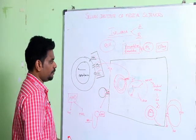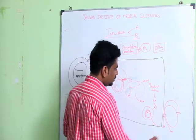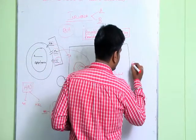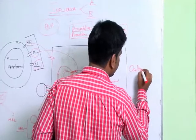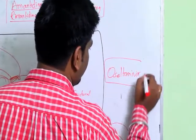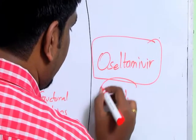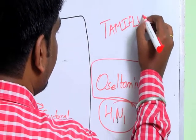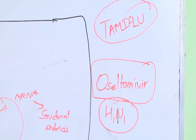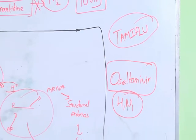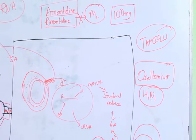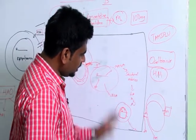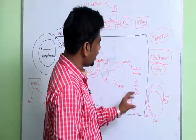Next, drugs were developed to act on and block neuraminidase activity. The key drug is oseltamivir, mostly used during H1N1 outbreaks, with its trade name Tamiflu, also known as swine flu. Oseltamivir is a neuraminidase inhibitor — it blocks the cleavage of hemagglutinin from the sialic acid, preventing viral release.